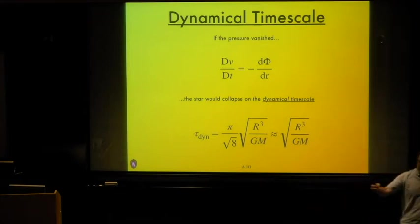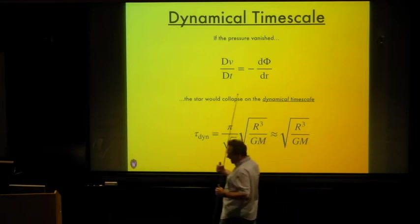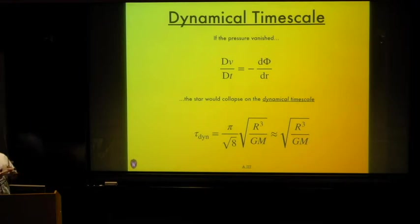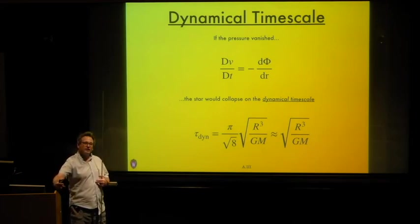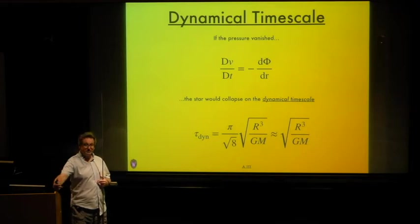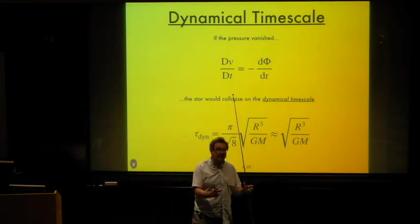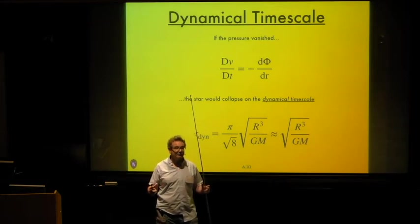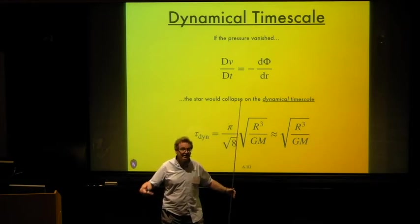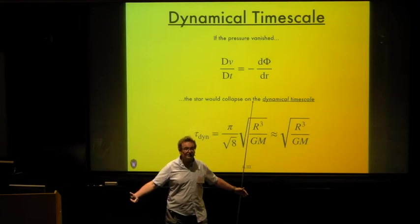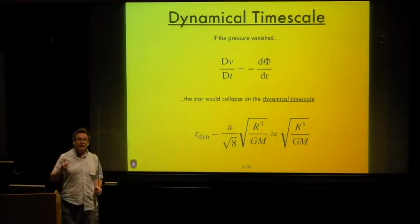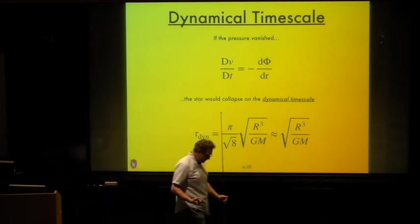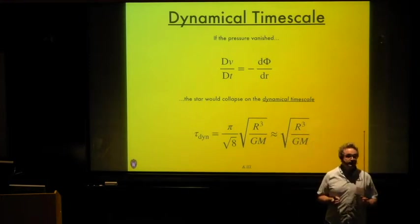Over long timescales — a year, a century, a millennium, a million years, a billion years — the Sun can be considered to be in perfect hydrostatic equilibrium. It's only when we worry about processes shorter than the dynamical timescale that we ever have to think about departures from hydrostatic equilibrium. In practice, there are very few points during a star's life where it ever significantly departs from hydrostatic equilibrium.